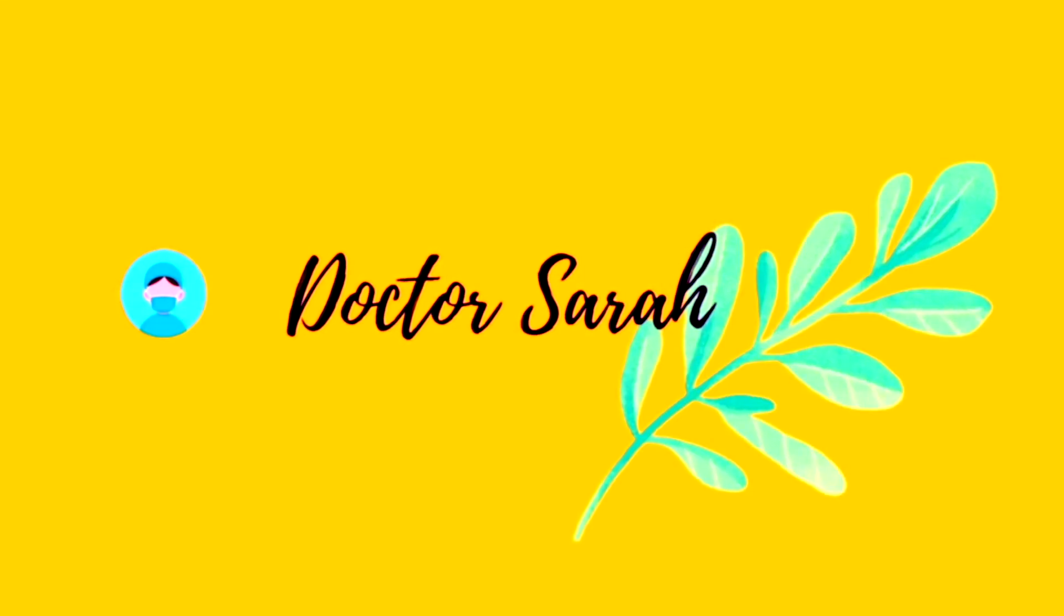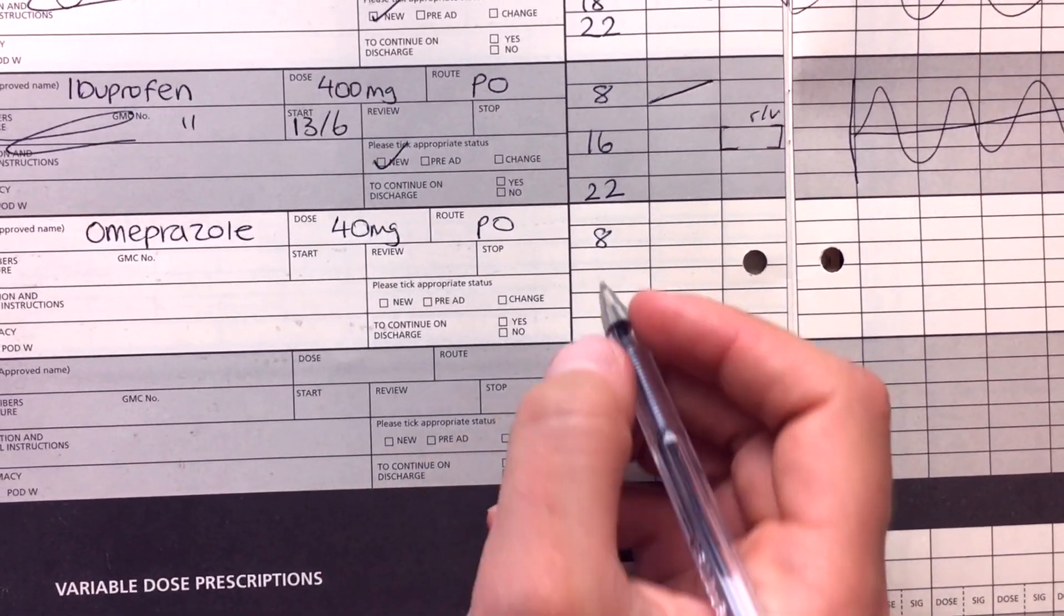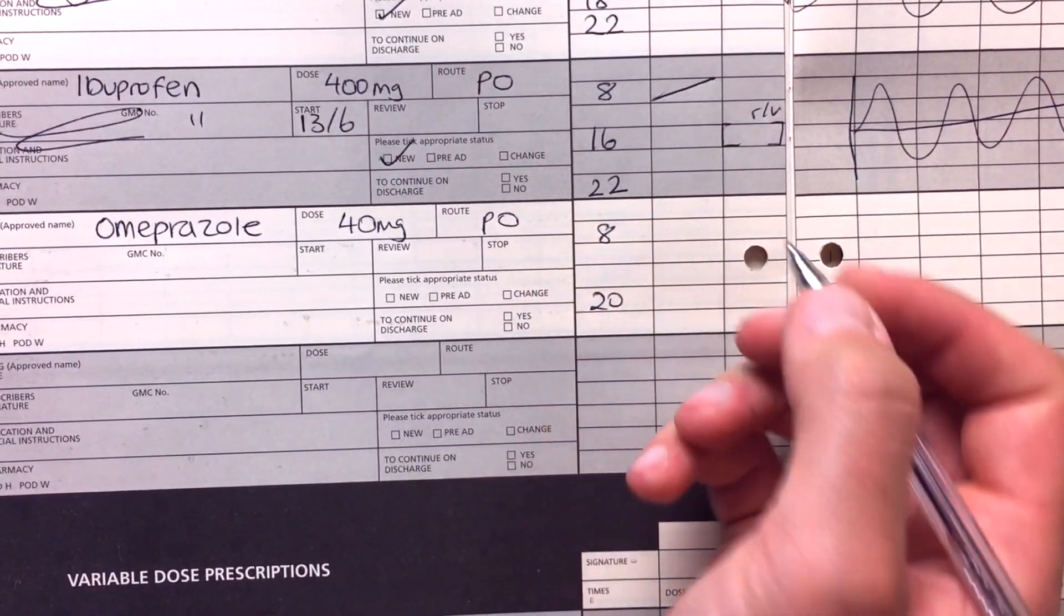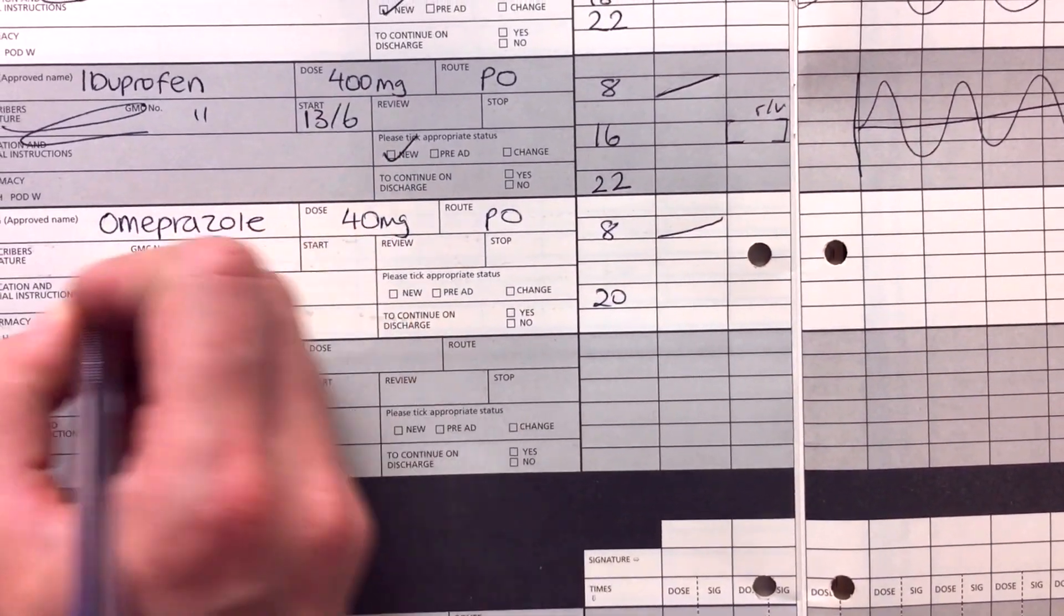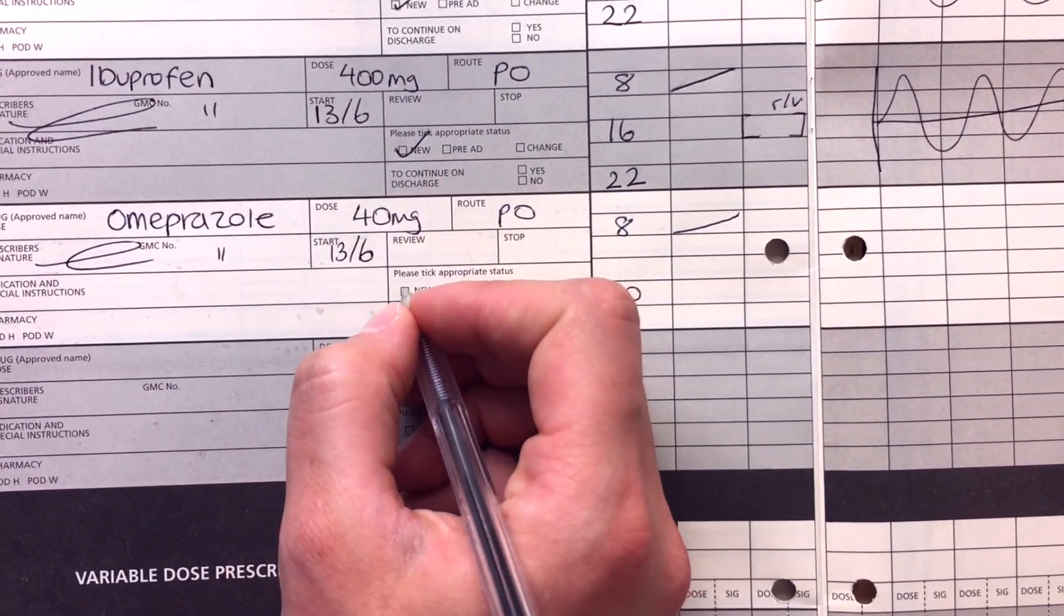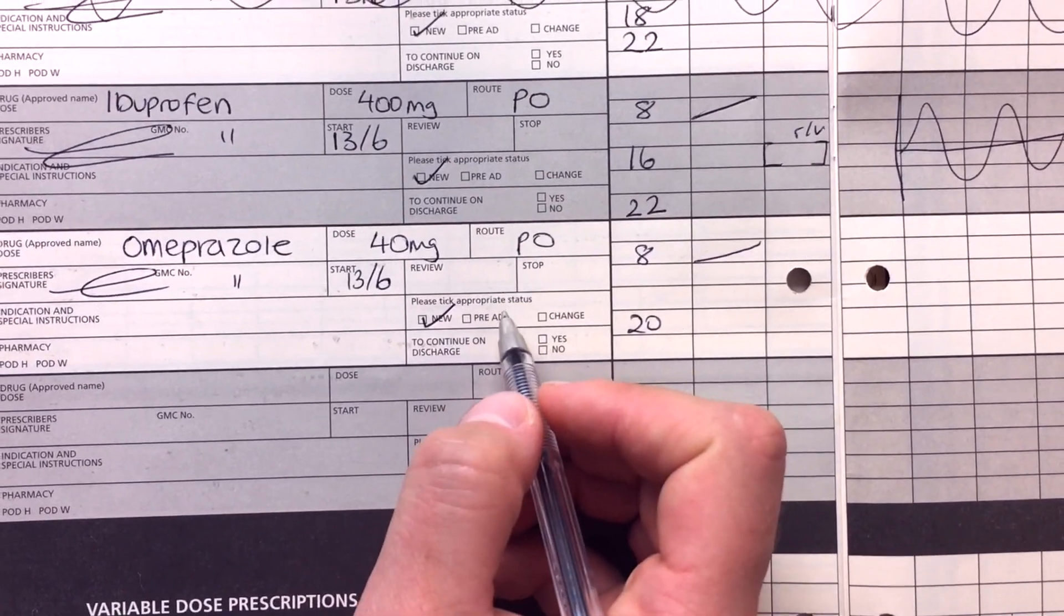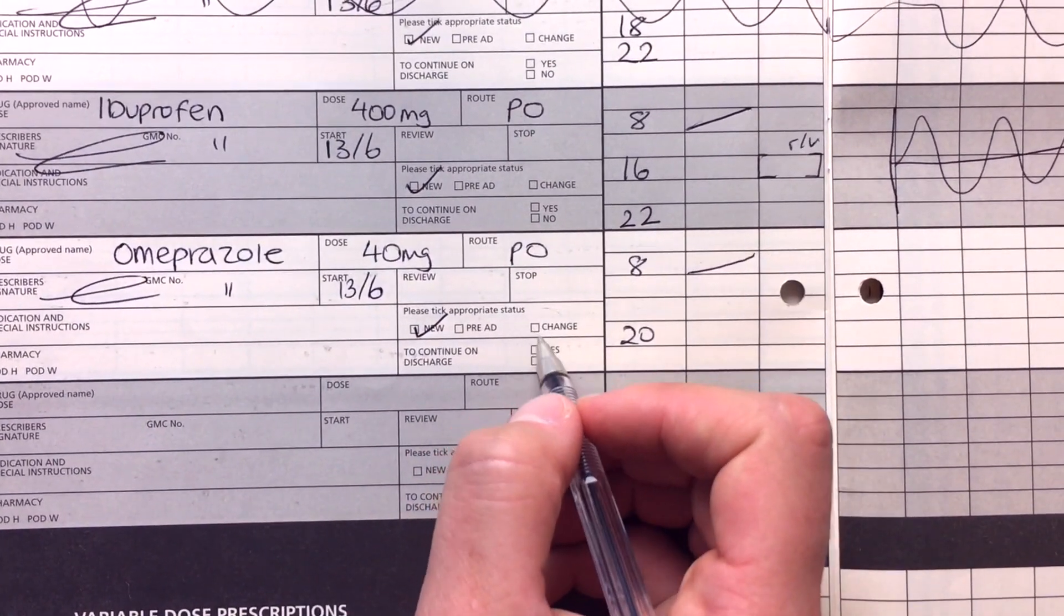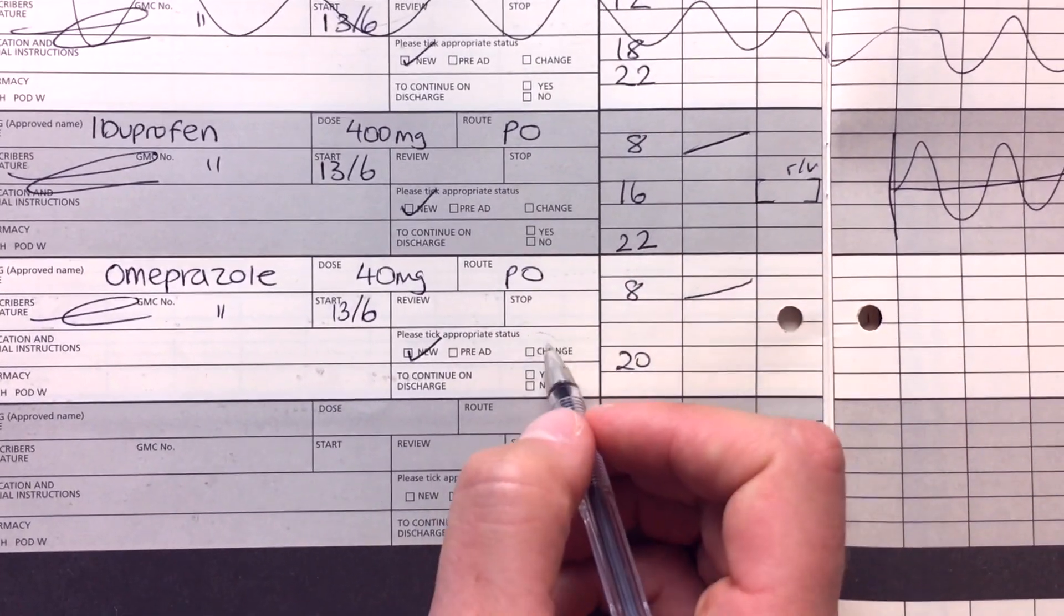Hi everyone and welcome back to another video on practical prescribing for doctors. If you haven't already, make sure you have a look at the last two videos on prescribing, including laxatives, antiemetics, analgesia and VTE. As a reminder, the focus of these videos are to show you how to practically prescribe on a drug chart and know the most common types of medications that you will be asked to prescribe when you start working as a doctor. It can be really scary to prescribe when you first start off working, but hopefully by seeing what it looks like in these videos, it won't be as terrifying. So today we'll be covering antibiotics.